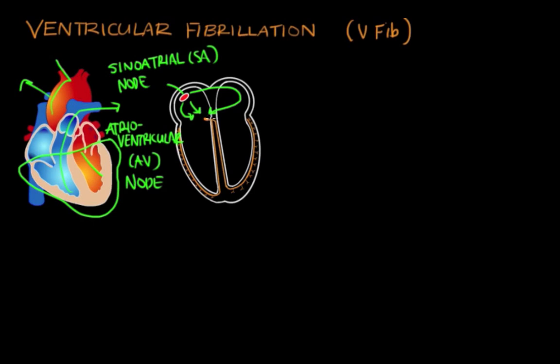From the AV node, the signal goes down to the ventricles and signals to the ventricles and makes the ventricular cells and the walls contract. When these walls contract, that's when blood is pushed out to the rest of the body.